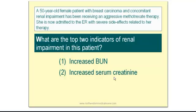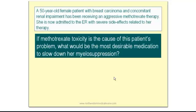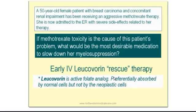What are the top two indicators of renal impairment? The gold standard for suspecting renal impairment would be increased plasma creatinine and BUN. Now if T-Rex were the cause of these findings, what would be the most desirable medication to slow down myelosuppression? The answer would be IV leucovorin, also called rescue therapy. Leucovorin is an active folic acid analog preferentially absorbed by normal cells, but not by neoplastic cells, so normal bone marrow cells can pick it up and get rejuvenated.